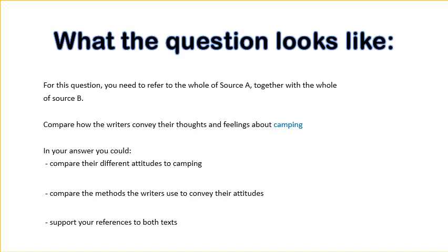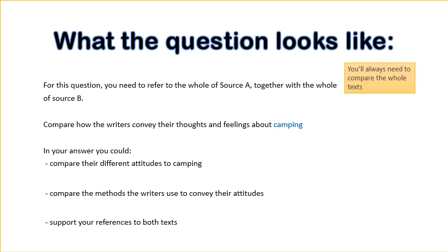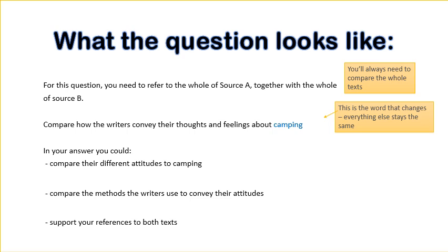The question we're focusing on for this session is about camping. It says: for this question, you need to refer to the whole of Source A together with the whole of Source B. It will always say you need to compare the whole text, so don't worry about getting your quotes from specific lines. The next part says to compare how the writers convey their thoughts and feelings about a given topic — in this case camping — and this topic is the only word that changes every time.